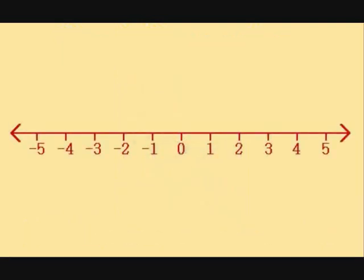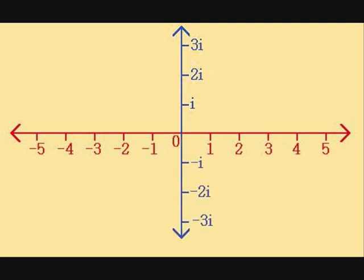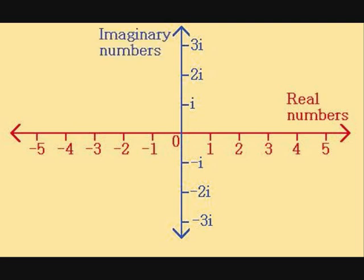So, where does i fit on our number line? The answer is, it doesn't. We draw a second line perpendicular to the first, and put i on there. We can now extend this new number line. Above i, we have 2i, then 3i, and so on. In the other direction, we have minus i, minus 2i, and so on. Using the terminology introduced by Descartes, the numbers we're familiar with are known as real numbers, while this new set of numbers are called imaginary numbers.